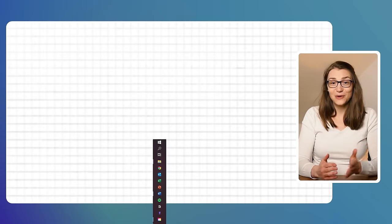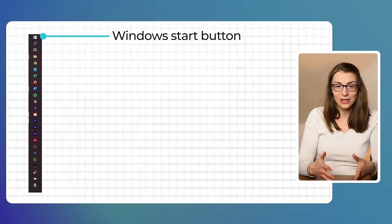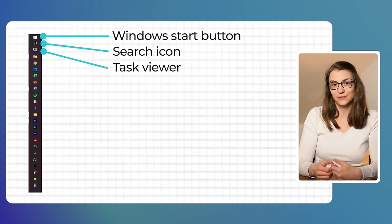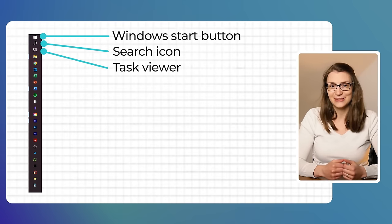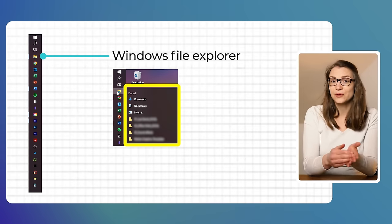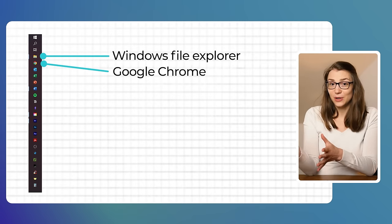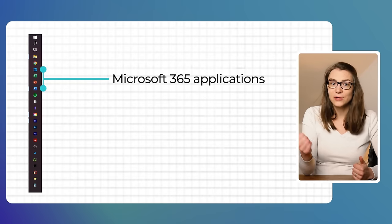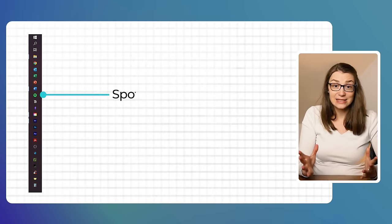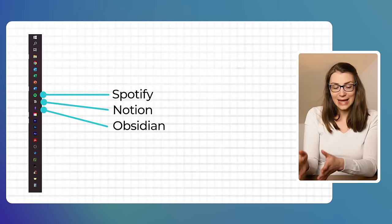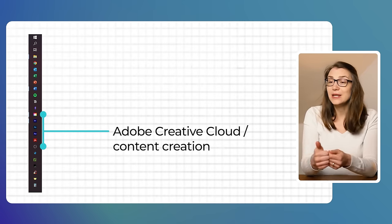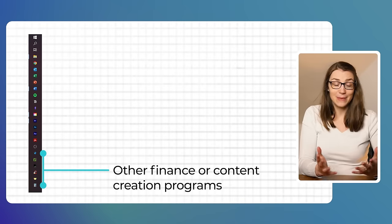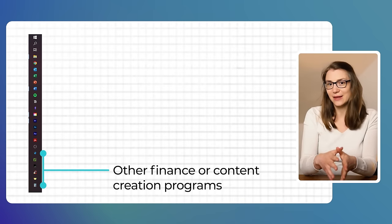I would recommend keeping all programs on your taskbar that you are frequently using and need quick access to, and sorting them in a logical way. My taskbar starts with the default Windows Start button, then the search icon and task viewer, which lets me access my timeline and virtual desktops. Thereafter comes the file explorer with frequently used folders, followed by Google Chrome, then Microsoft 365 applications — Outlook, Excel, PowerPoint, and Word — then Spotify, Notion, Obsidian, my Adobe Creative Cloud Suite, and video and content creation apps.